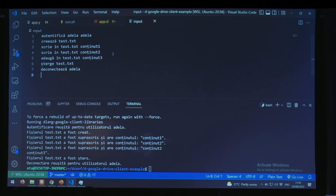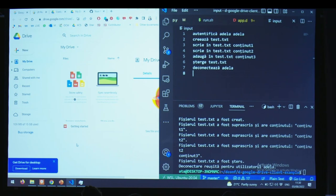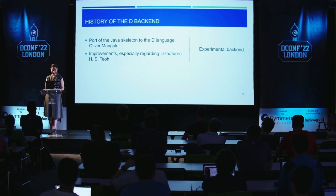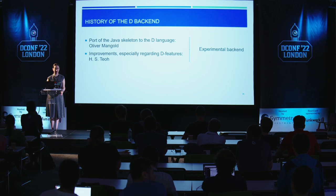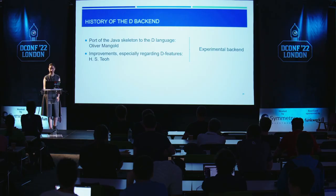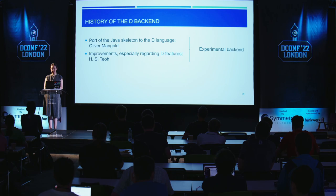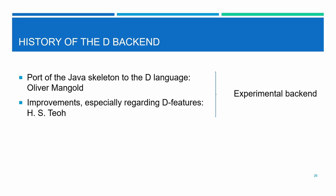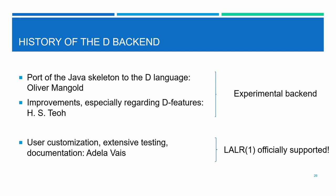From the customer's perspective, they just write simple commands that make sense to them, and behind the scenes the entire program is tested. As a bit of history: for the D backend, it started when Oliver Mangle ported the Java skeleton to D, then HSToch made improvements using D language features. This was called the experimental backend, part of Bison but not officially supported. I inherited it, added user customization, tested it, and added documentation to Bison's manual — so now LALR(1) is officially supported.